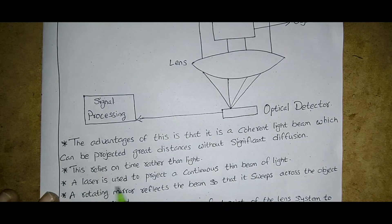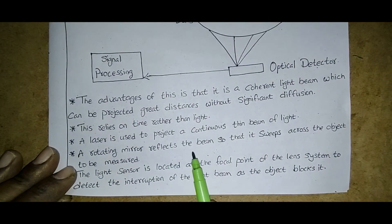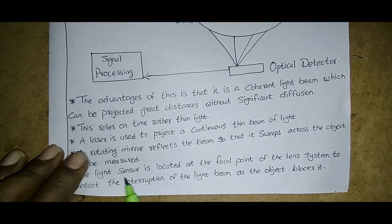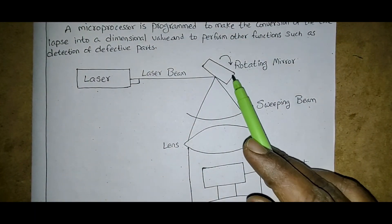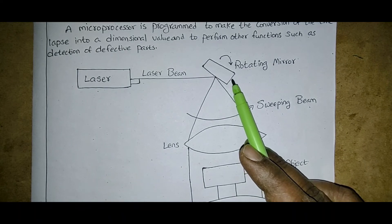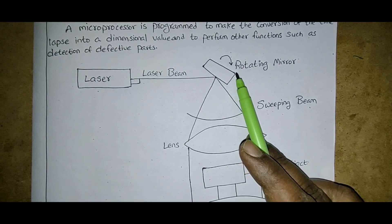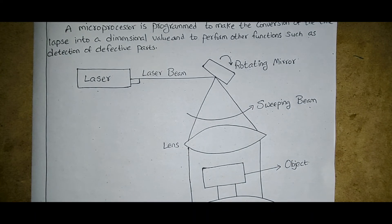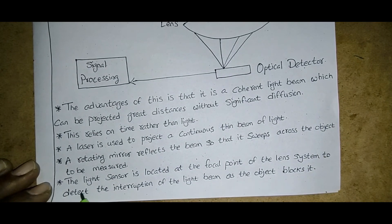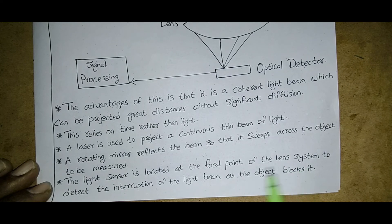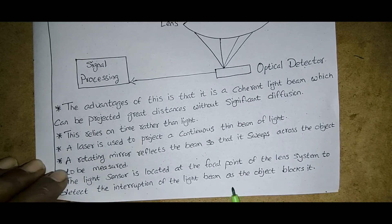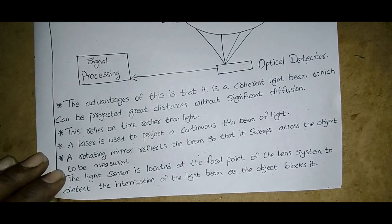A rotating mirror reflects the beam so that it sweeps across the object to be measured. This rotating member sweeps the beam across the object. The light sensor is located at the focal point of the lens system to detect the interruption of the light beam as the object blocks it.